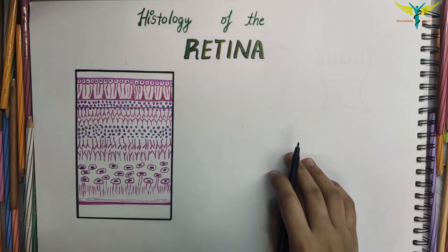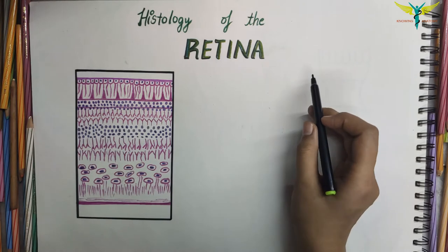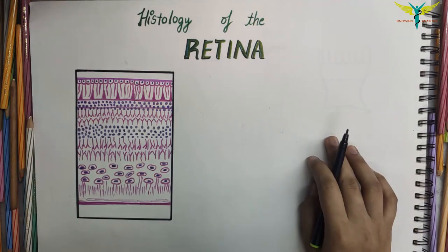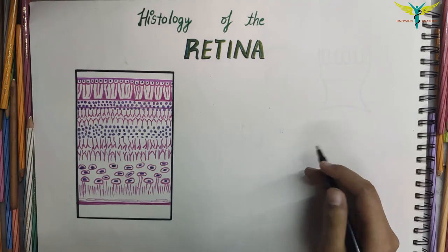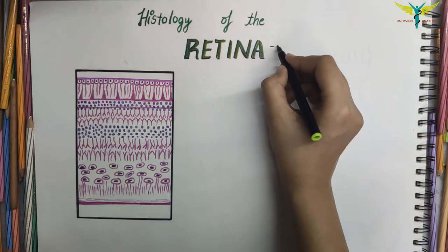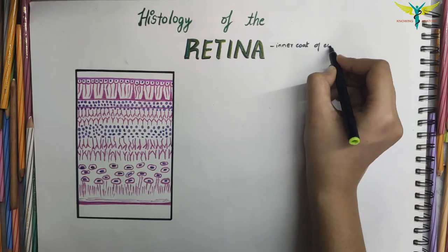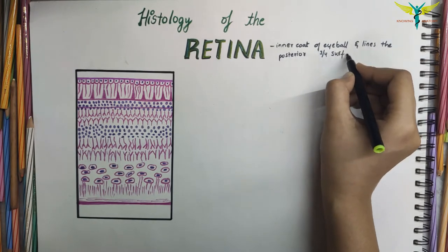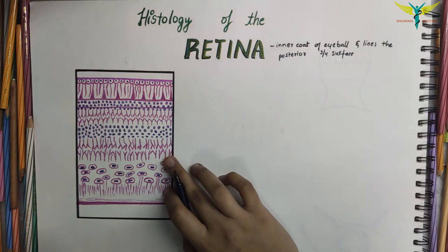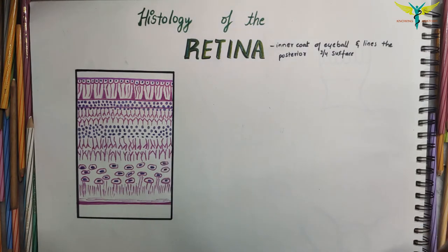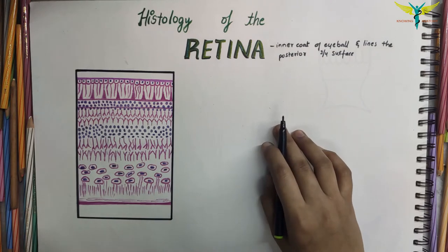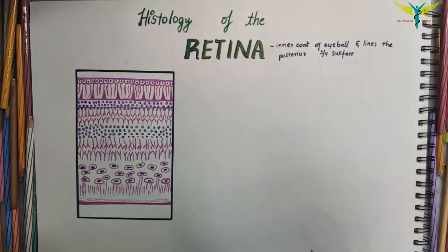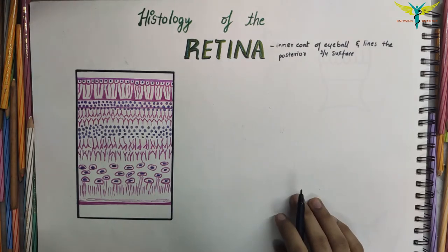In this video, let's learn about the histology of the retina. The retina is the inner coat of the eyeball and it lines the posterior two-thirds of the surface. The retina contains photoreceptors — the rods and cones — which are essential for vision. The retina has a specialized area where vision is more acute, called the fovea centralis or the macula.